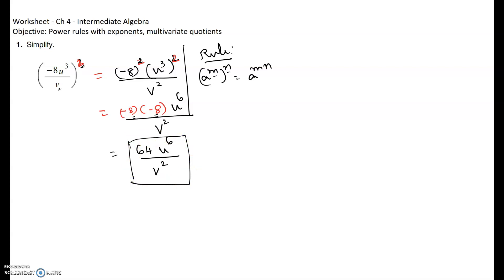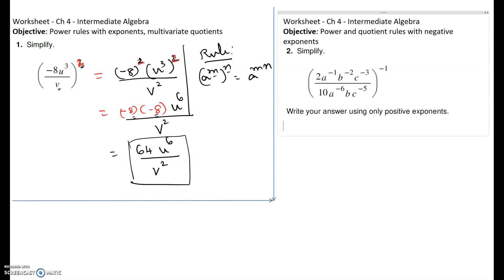In the same video we will try problem number two as well. Problem number two objective: power and quotient rules with negative exponents. Simplify 2 times a to the negative 1, b to the negative 2, c to the negative 3, all divided by 10a to the negative 6, b, c to the negative 5, the whole thing to the power negative 1.